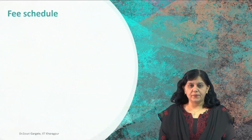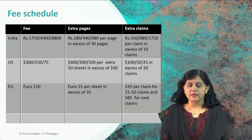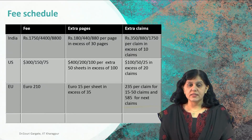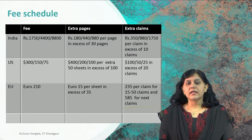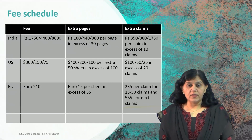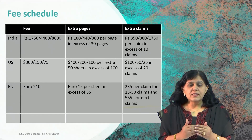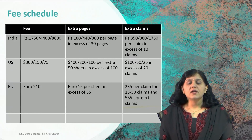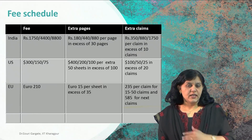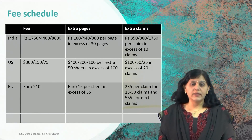In India, as we have already seen, there is a small entity category. What are the three categories considered when filing a patent? The first category is a natural person, or it will be a startup — which was recently included. The fee structure is different for these three categories. Natural person and/or startup is considered as one category.